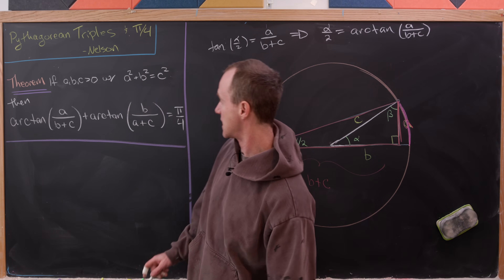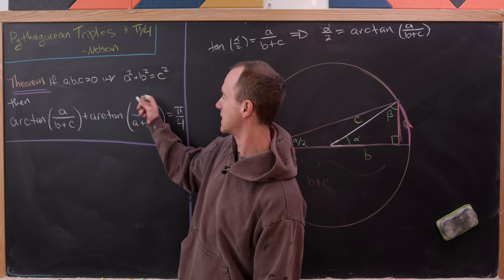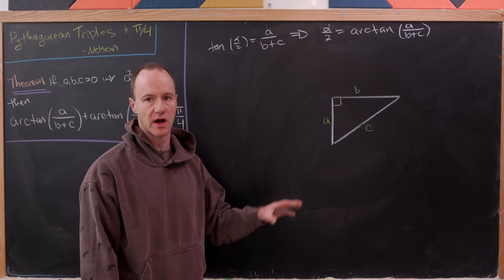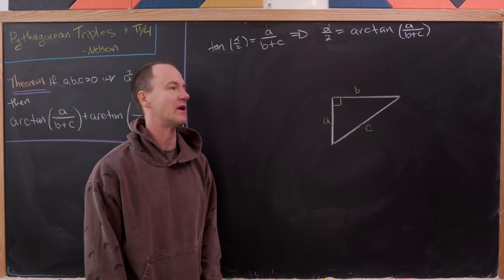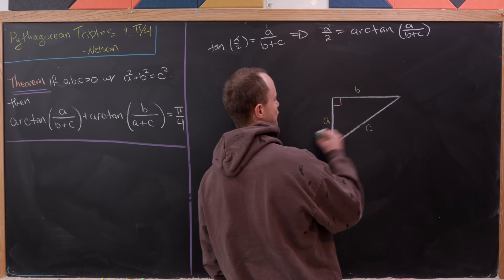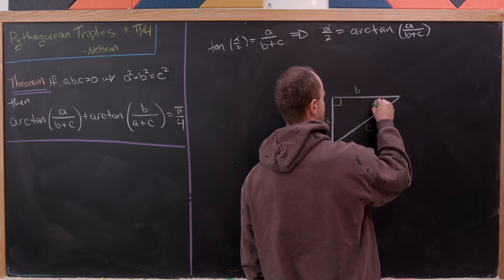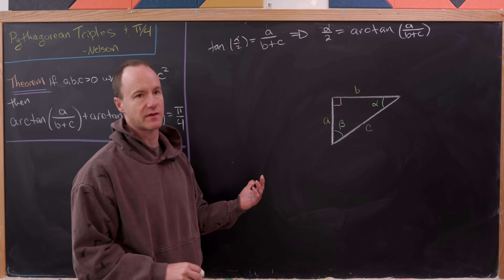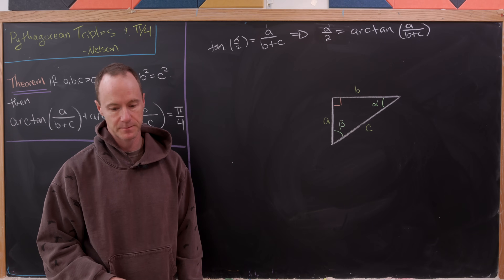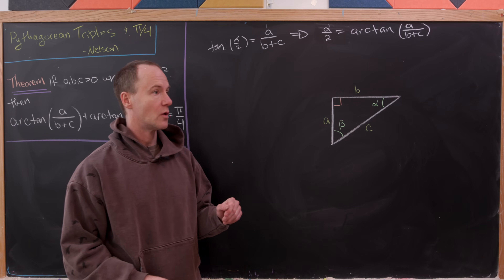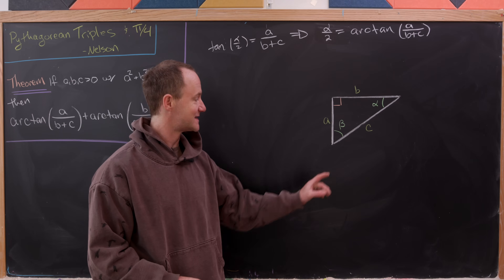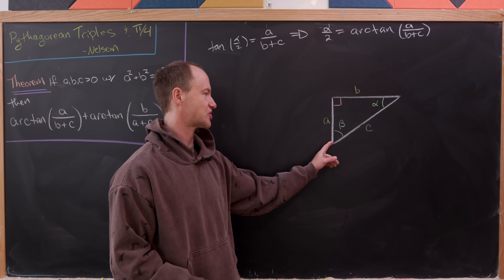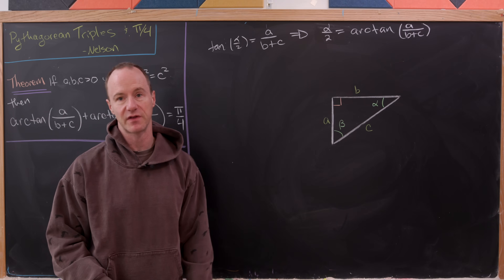Now let's see how we get the arctan of b over (a+c). We take our original triangle, flipped, with angles alpha opposite side a and beta opposite side b. We're going to create a circle with radius c centered at the vertex where sides of length a and c intersect.